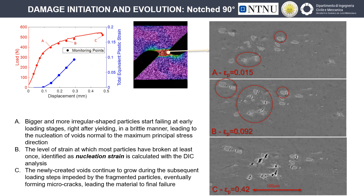The results obtained for the zero-degree notched sample were consistent with the other tested geometries as well. The main difference is the orientation of the fracture plane of the particles. Indeed, these particles break in a brittle manner, so their fracture plane is perpendicular to the maximum principal stress direction, and changing the loading condition, the orientation of the fracture plane changes accordingly.